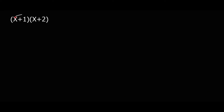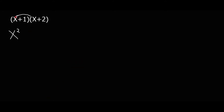So this means we multiply x times x, which gives x squared — remember x to the power 1 times x to the power 1, because the bases are the same we add the exponents, so that is x squared. Then x times 2 gives 2x. And from here, 1 times x gives x, and 1 times 2 gives 2.